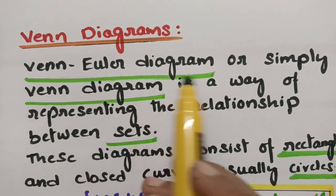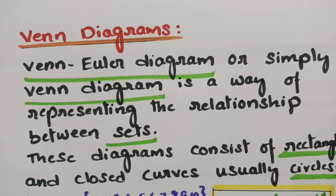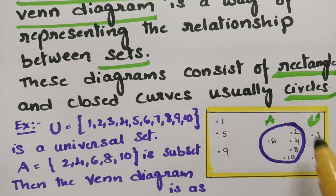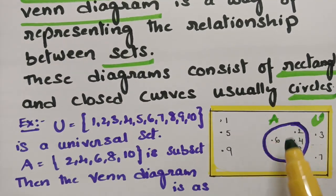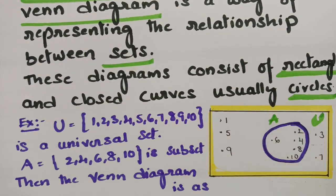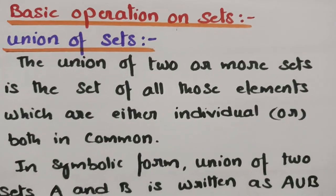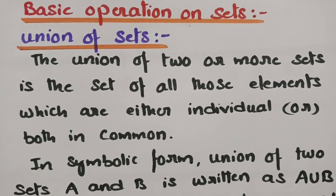So a Venn-Euler diagram, or simply a Venn diagram, is a way of representing the relationship between sets. These diagrams generally consist of rectangles and closed curves, usually circles. Now, the basic operations on sets — what are the basic operations on sets?